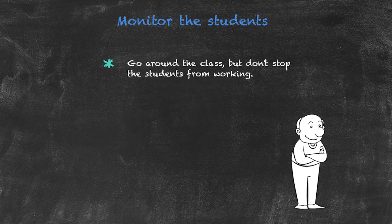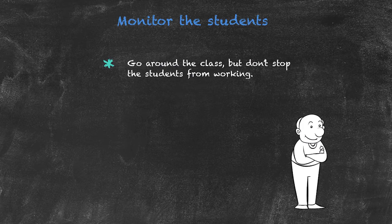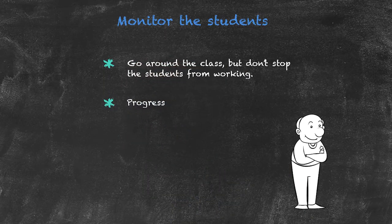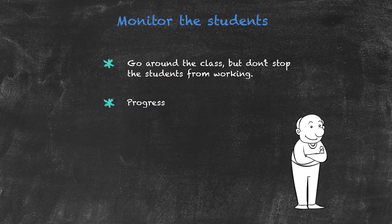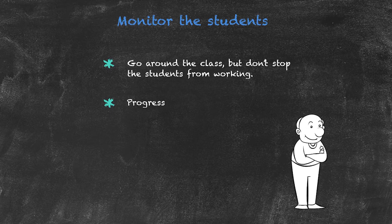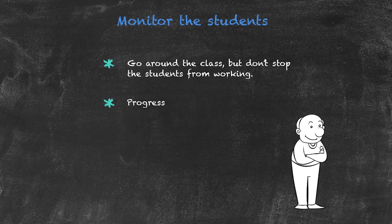Monitor from a distance so that you're not interrupting anyone. Some of the things you can be noting down whilst monitoring is their progress. It's useful to monitor progress because once the activity has been stopped, you're going to feedback their answers, and it's important that you know who has done what. You don't want to be asking a particular group for their answers to question 7 if they haven't completed it. Check to see what their progress is, ready for the feedback.